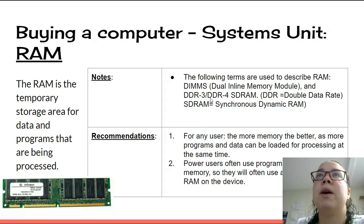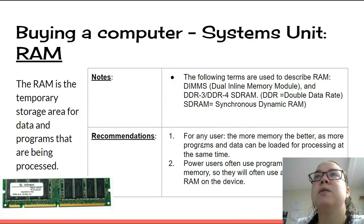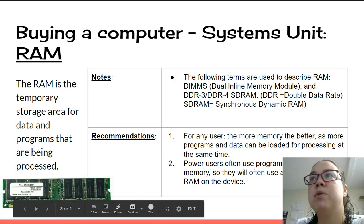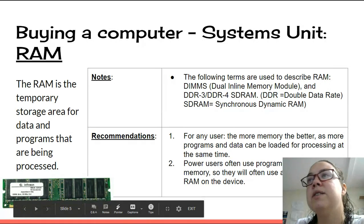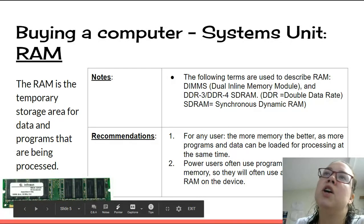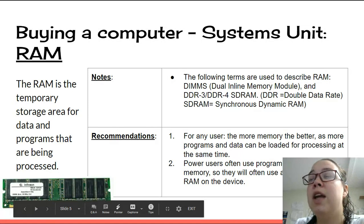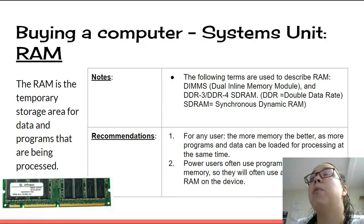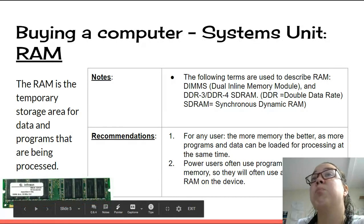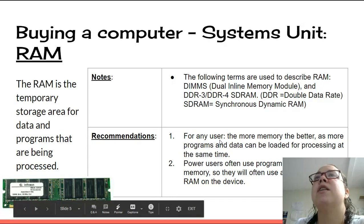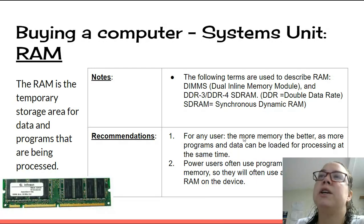Generally, if you're a gamer, you want to buy DDR4 RAM. For any user, the more memory the better, as more programs and data can be loaded for processing at the same time. Power users often use programs requiring a lot of memory, so 8 to 16 gigabytes is common — though power users doing heavy video or photography are probably using 32 to 64 gigs of RAM. Your average gamer, 8 to 16 gigs is fine, and for an average user, 4 to 8 gigs is more than enough.